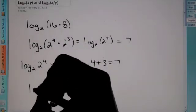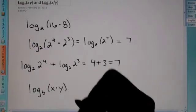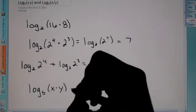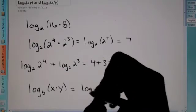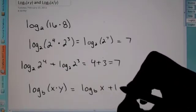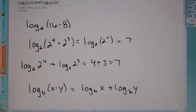So, if I give you log base b of x times y, the way we can rewrite this is log base b x plus log base b y. So, we're going to be able to use this to solve for variables now.